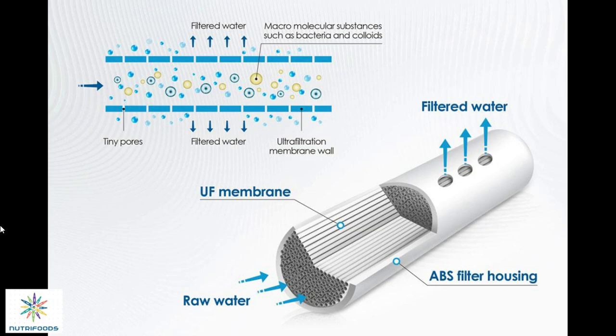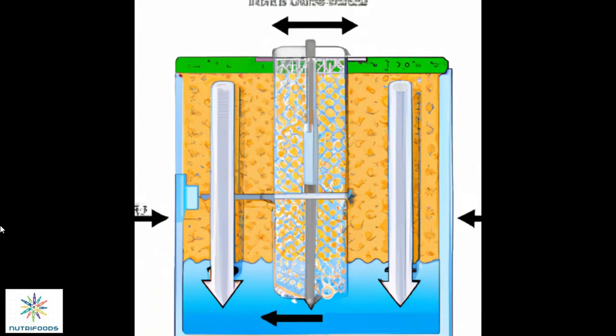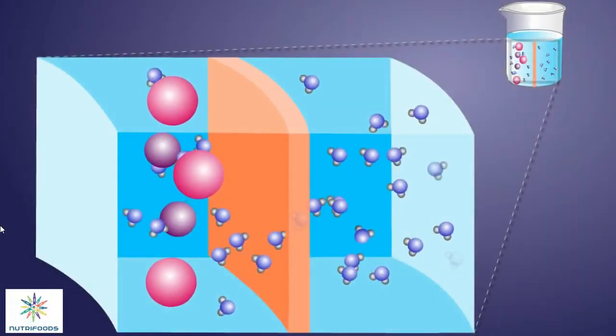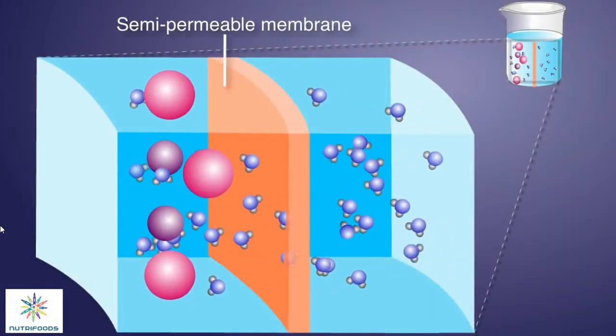Ultrafiltration is a highly efficient and selective process that can be used to purify or concentrate complex mixtures such as proteins from blood or wastewater. It is commonly used in industries such as biotechnology, pharmaceuticals, food and beverage, and water treatment. Additionally, the process has gained increasing attention in nanotechnology, where it can be used to fabricate self-assembled structures and to separate nanoscale particles from solutions.